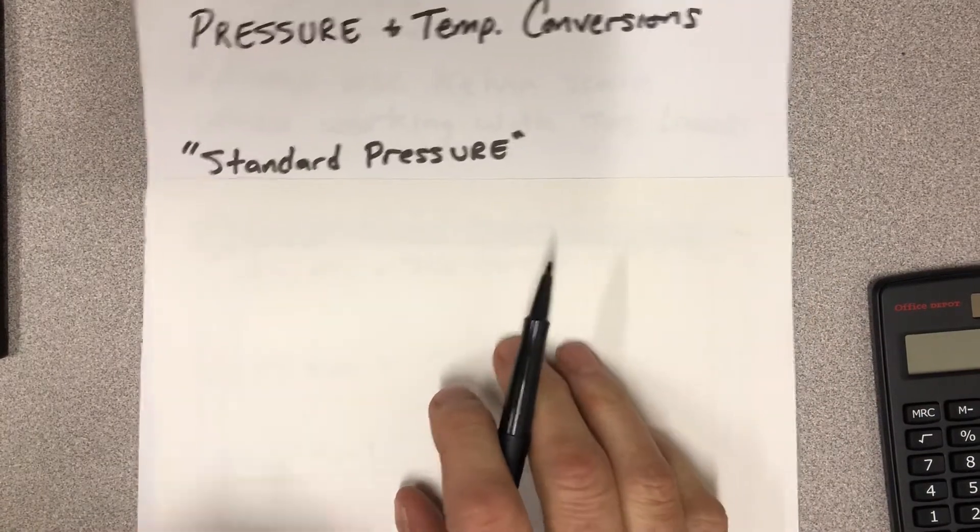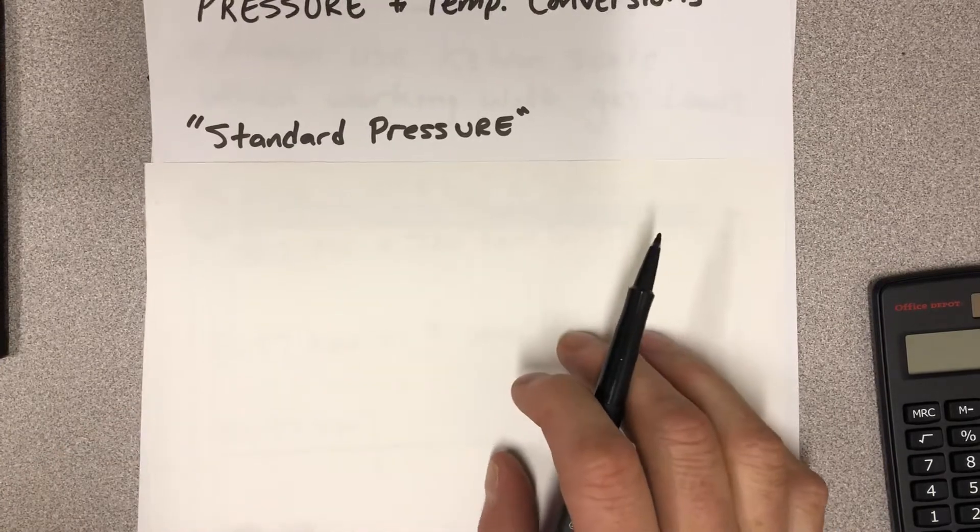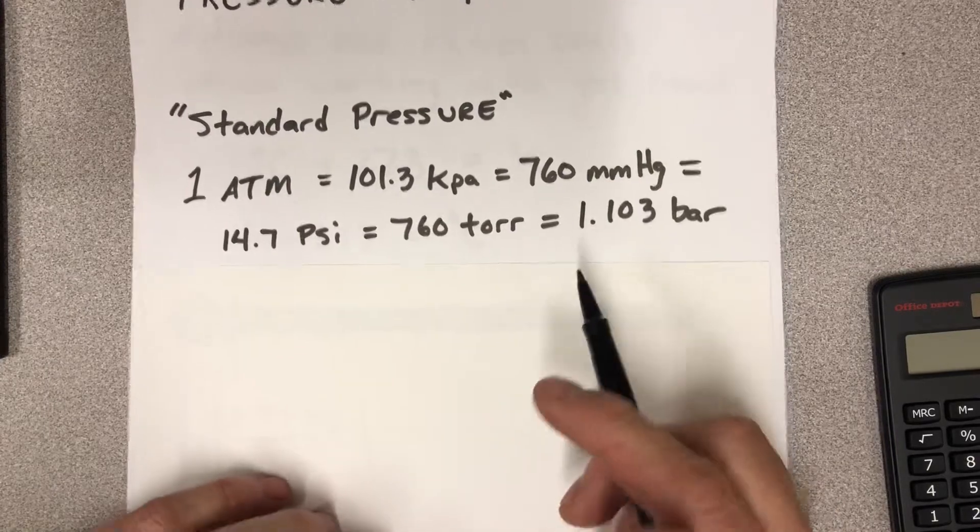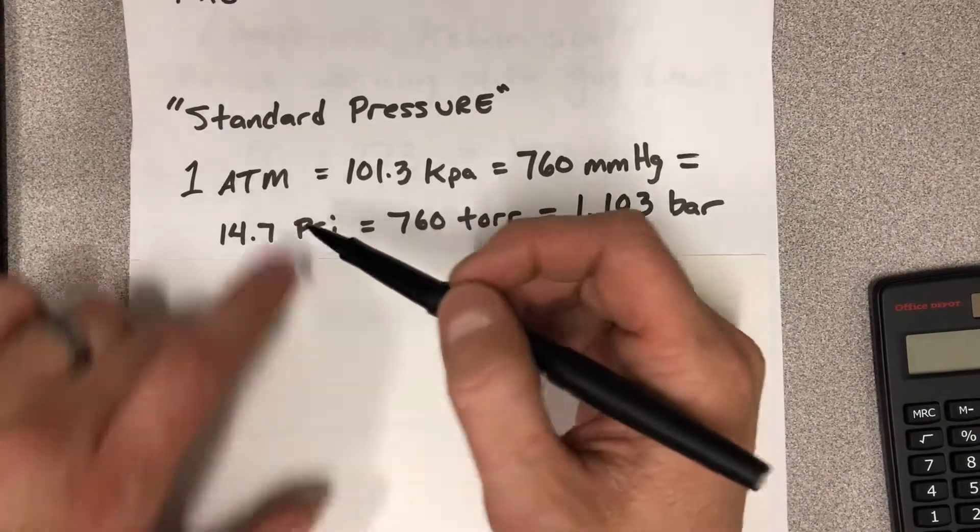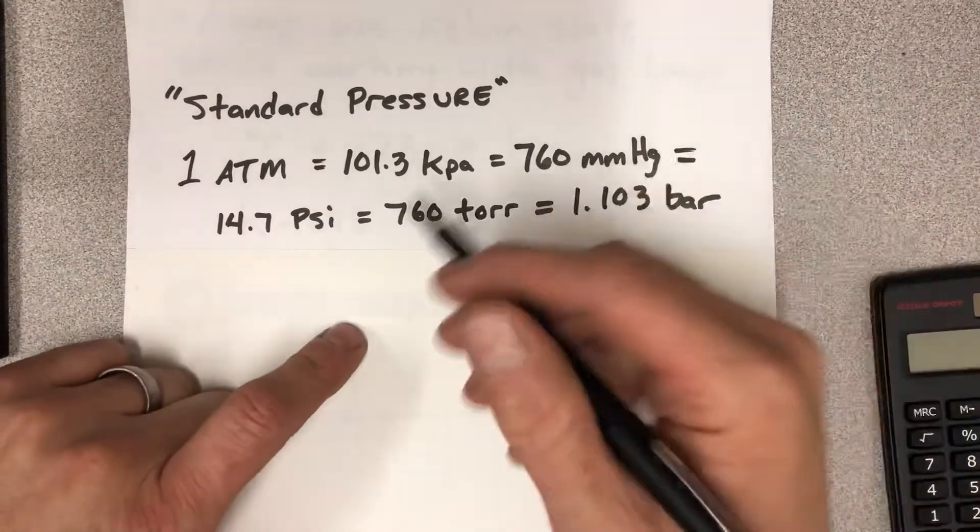So what we have are these things called standard pressures, and they're used to make conversions between different pressure units. And so here are some standard pressures. The easiest one is the one atmosphere, but we can have that equal to a number of different pressure units.